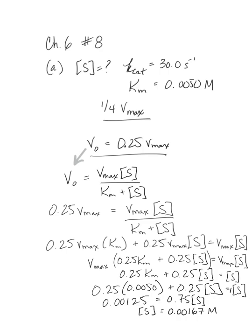If you look at the answer in the solutions manual, it's 1.7 times 10 to the negative 3 molar, which is exactly what we get with our calculation. The method I used here has many more steps shown than the one in the solutions manual — theirs is fine, but they do a few steps in their heads. I showed every algebraic step clearly so you could follow it. I know some people had questions on this one, so hopefully this helped. If you have any questions, please comment or post to Piazza. Thank you.